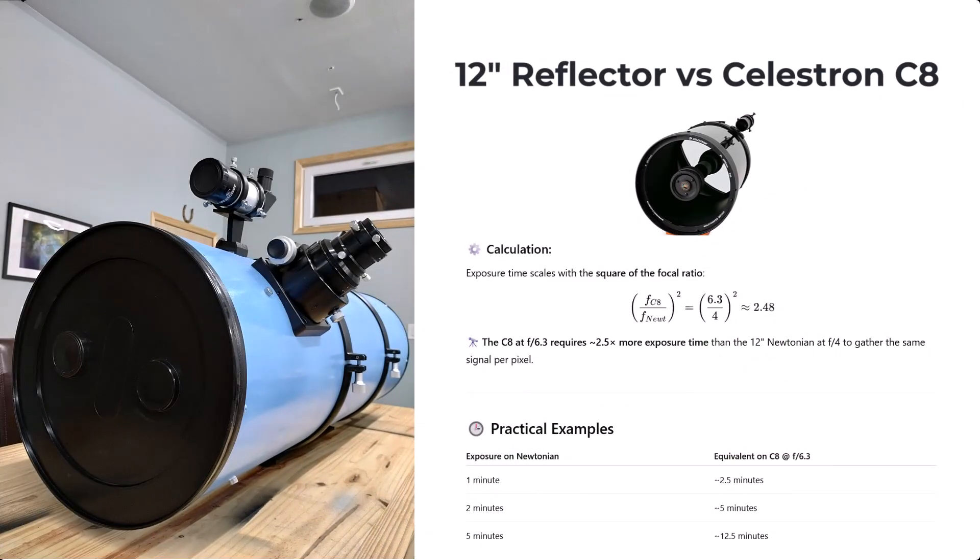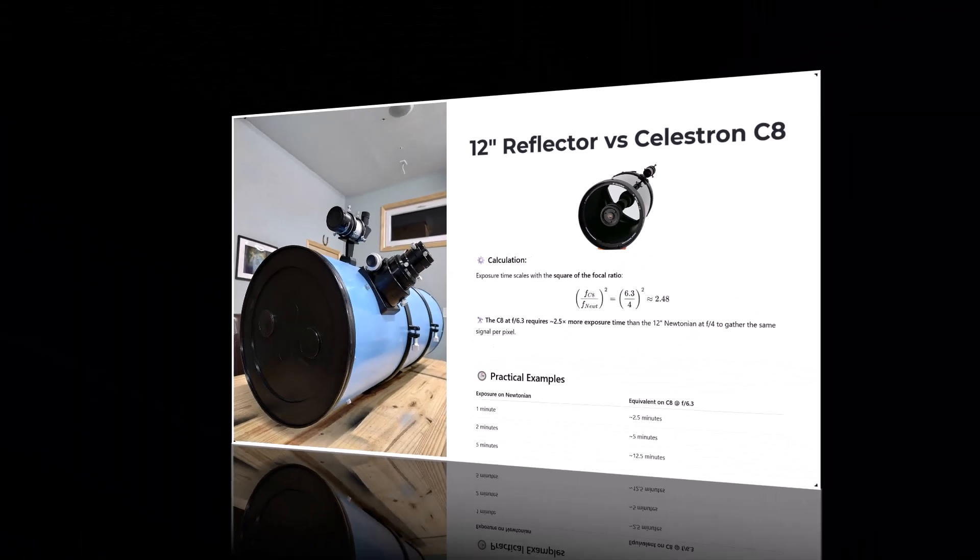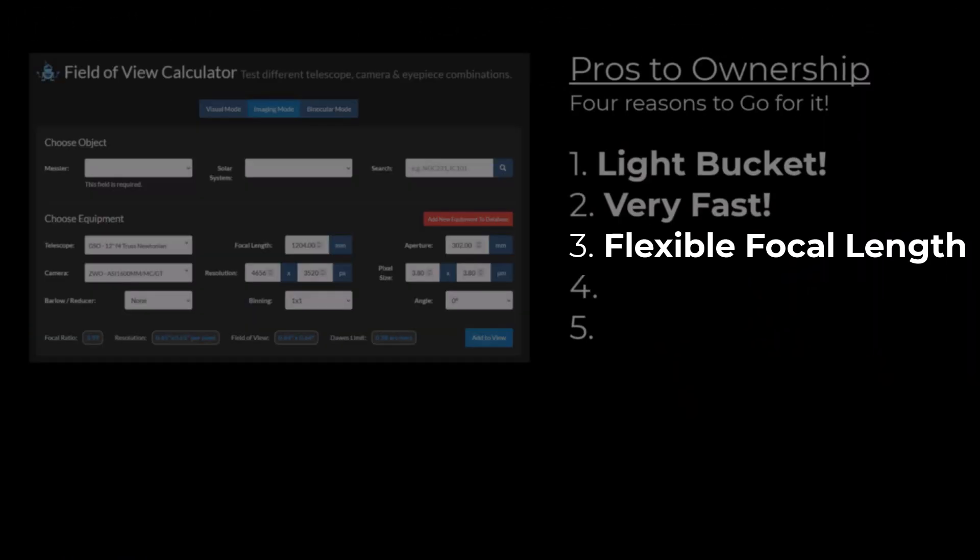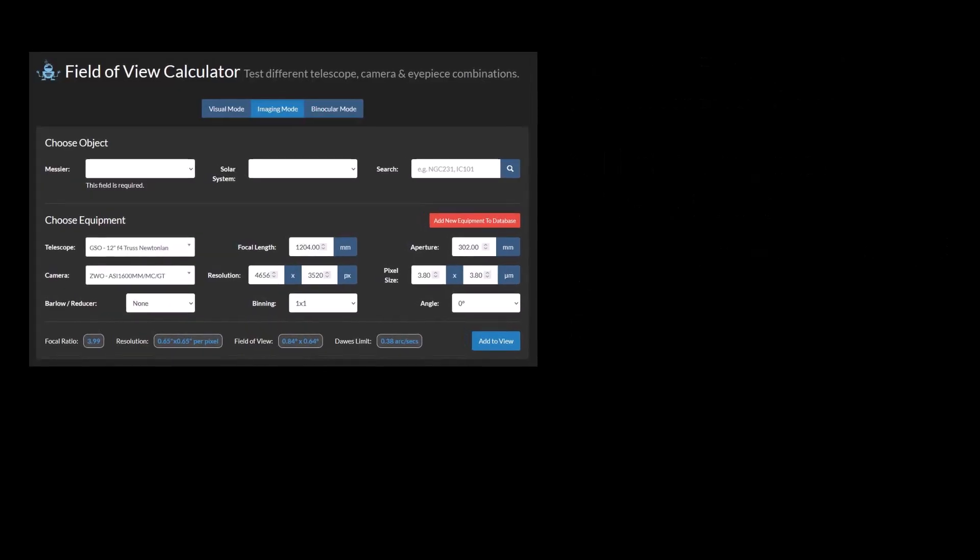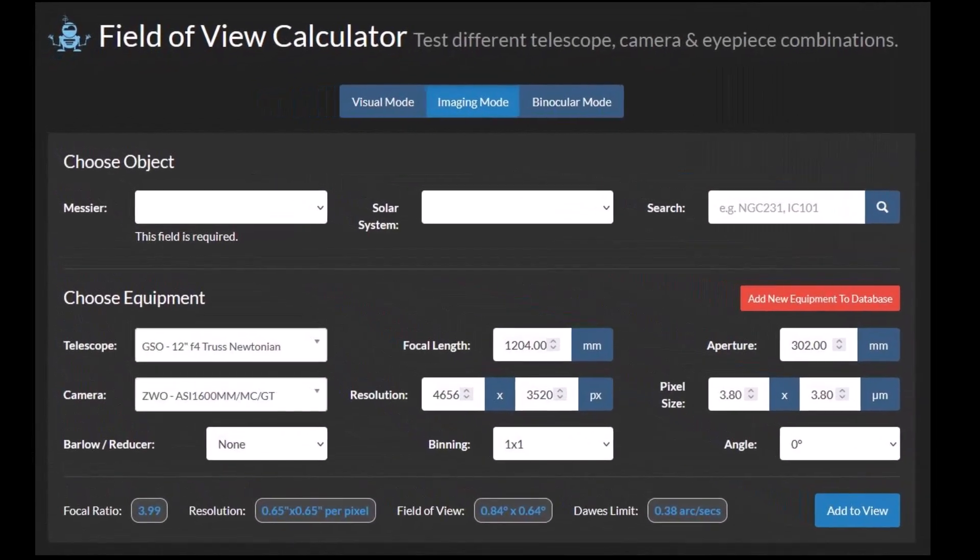An hour of data captured with the F4 Newt would require two and a half hours with the C-8, including the F6.3 reducer.